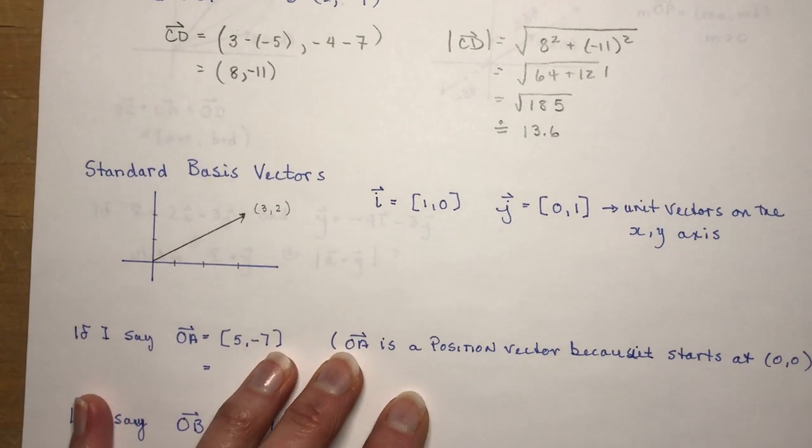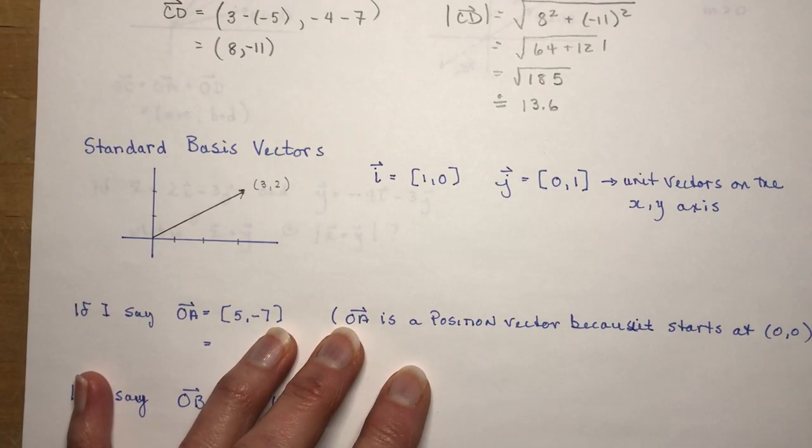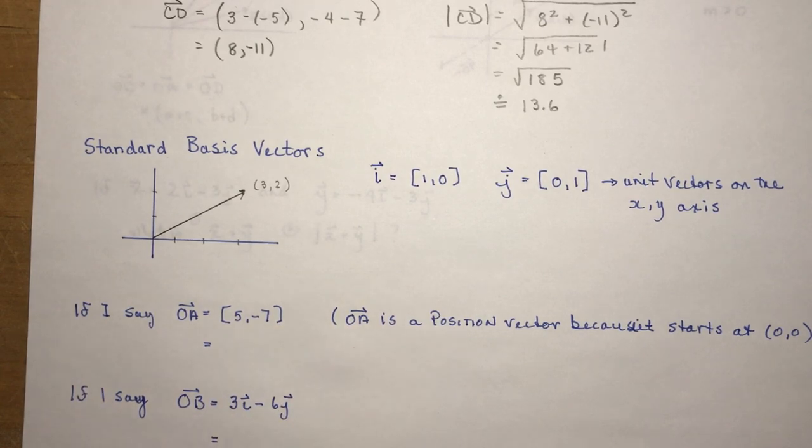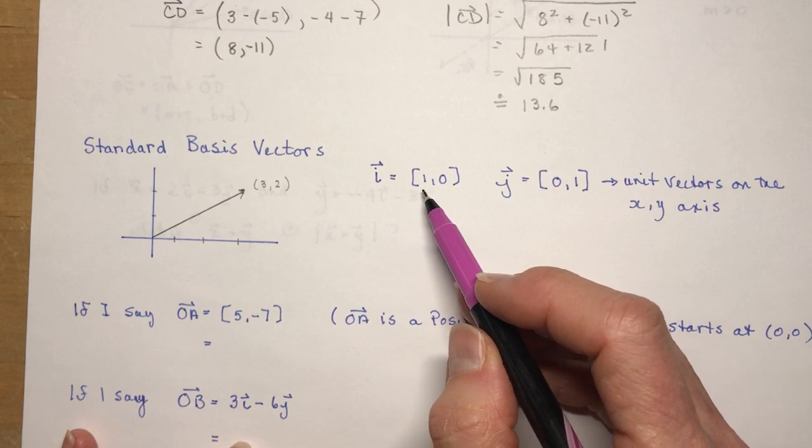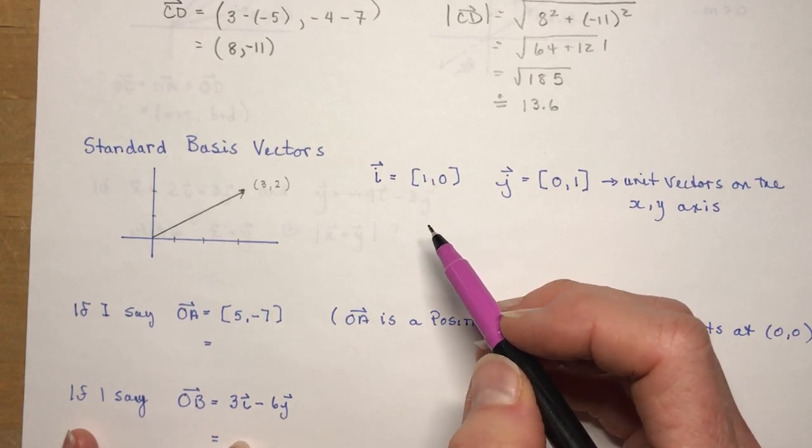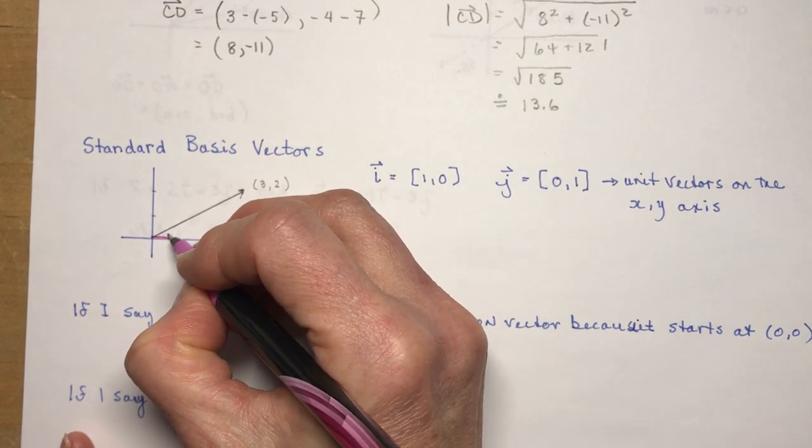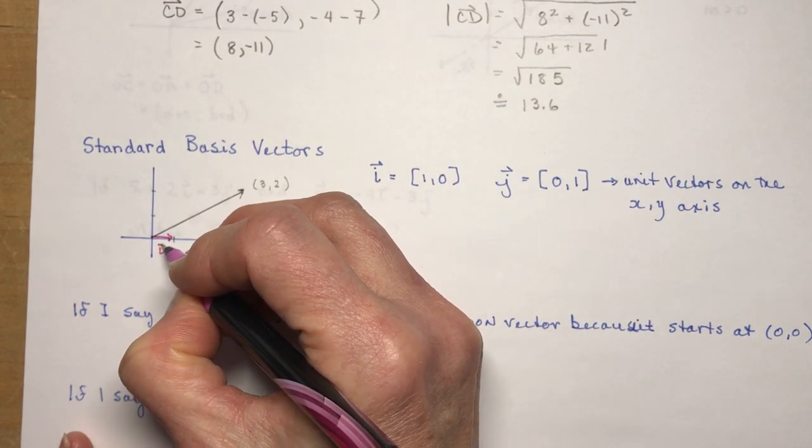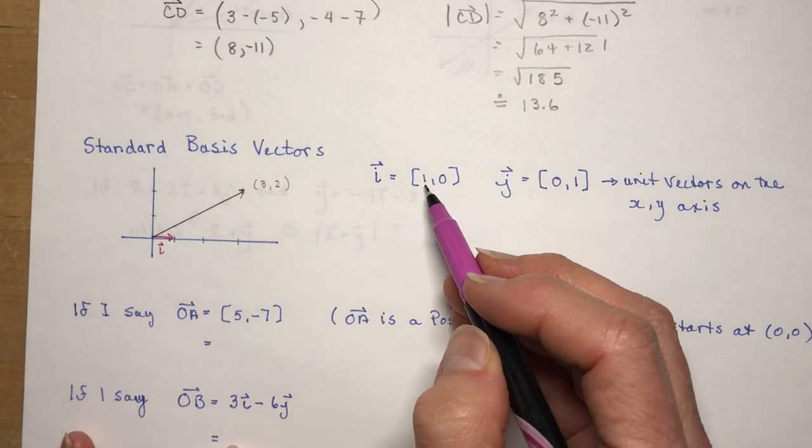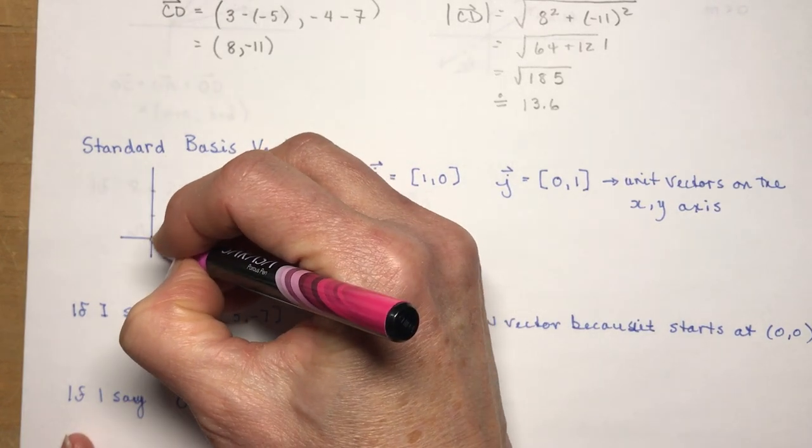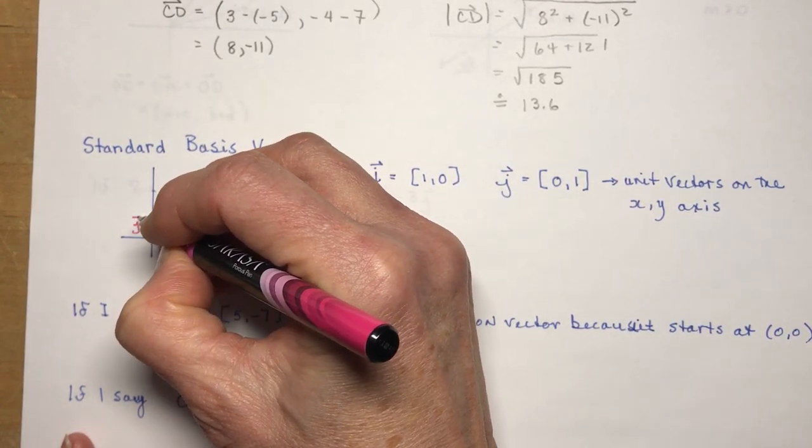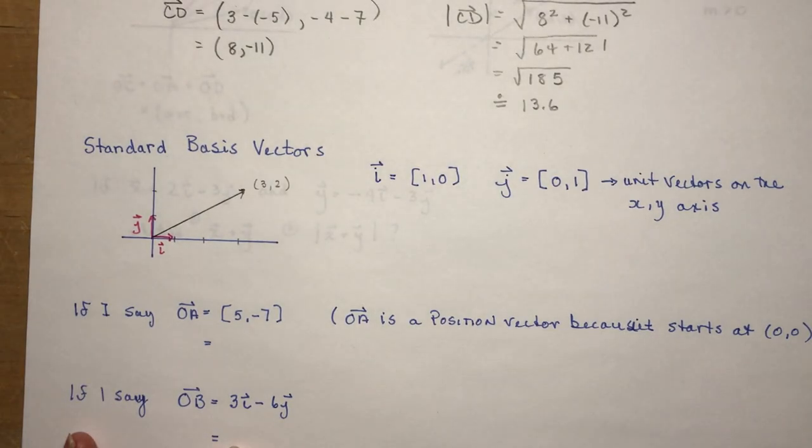So the next topic in this section is what we call standard basis vectors. This is really quite simple, because what we're talking about here are the unit vectors that we talked about previously, which have a length of 1. So vector I here would be, this would be vector I right here. It's one unit on the x-axis. Notice the coordinates. X is 1, Y is 0, and J is going to be 0, 1. So here's my unit vector J. So standard basis vectors, unit vectors on the x, y-axis, we're talking about the same thing here.